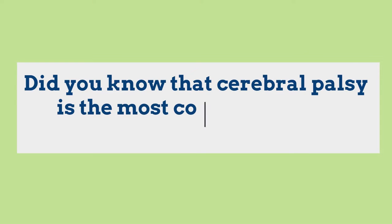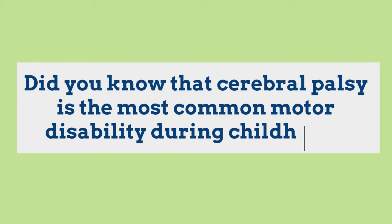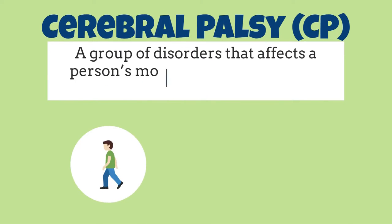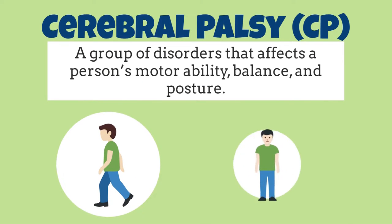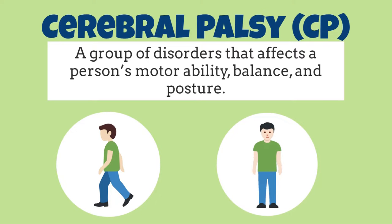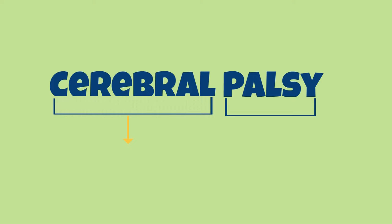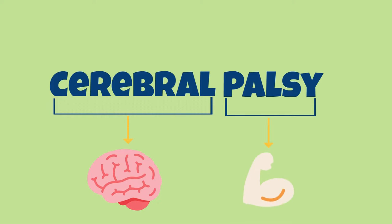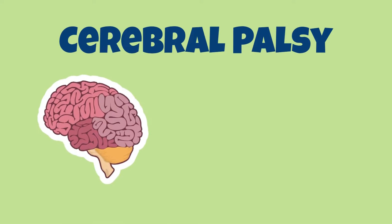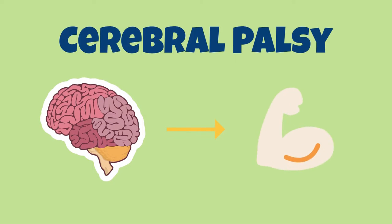Did you know that cerebral palsy is the most common motor disability during childhood? Cerebral palsy refers to a group of disorders that affects a person's motor ability, balance, and posture. To better understand cerebral palsy, we can break down the word into cerebral and palsy. Cerebral refers to any condition related to the brain, and palsy refers to muscle weakness or any other problem related to using your muscles. Cerebral palsy can be caused by abnormal brain development or brain damage that affects muscle control in individuals.